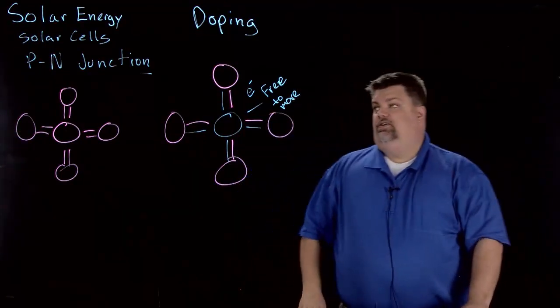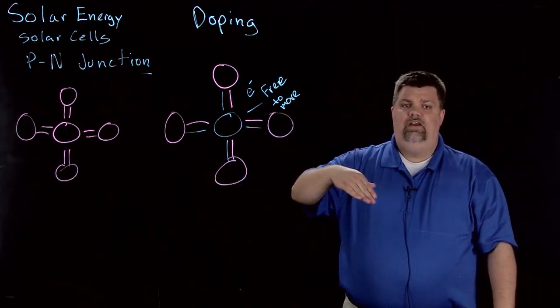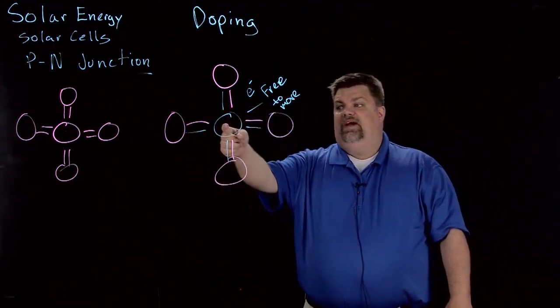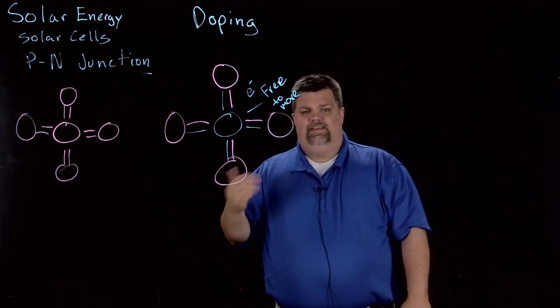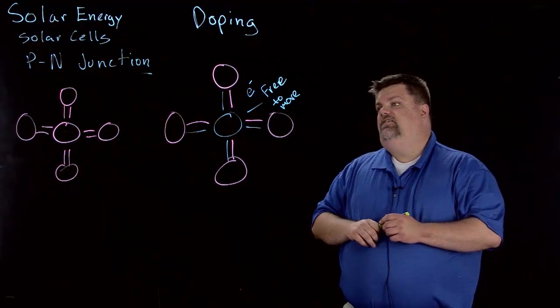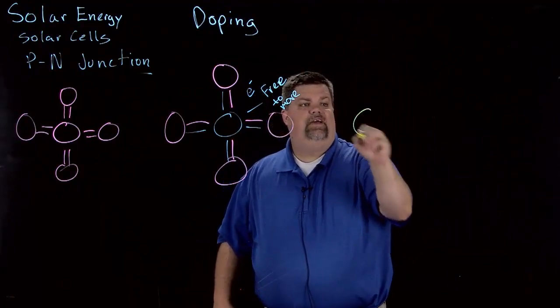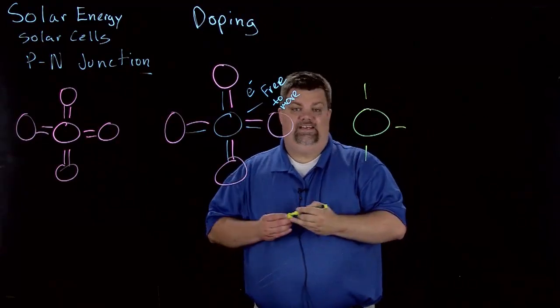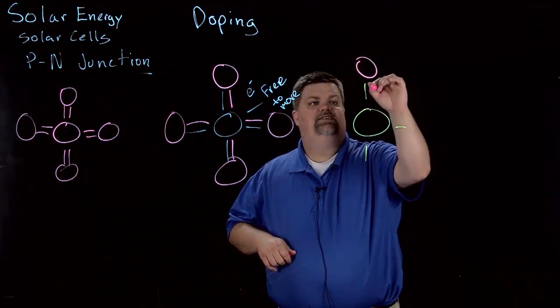In order to promote that current, usually what we like to do is dope the other side. So there's an anode and a cathode. We dope one side by adding a similar semiconductor or metal that has an extra valence electron, five instead of four. Then we do the same thing on the other side except now we're going to have one less valence electron.